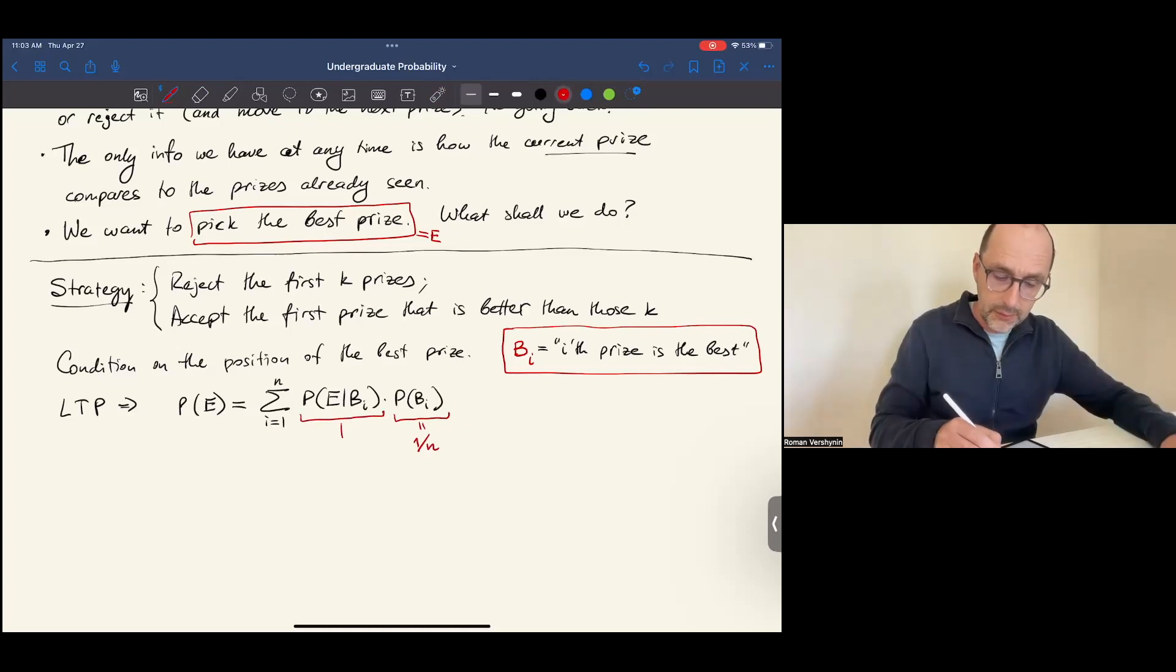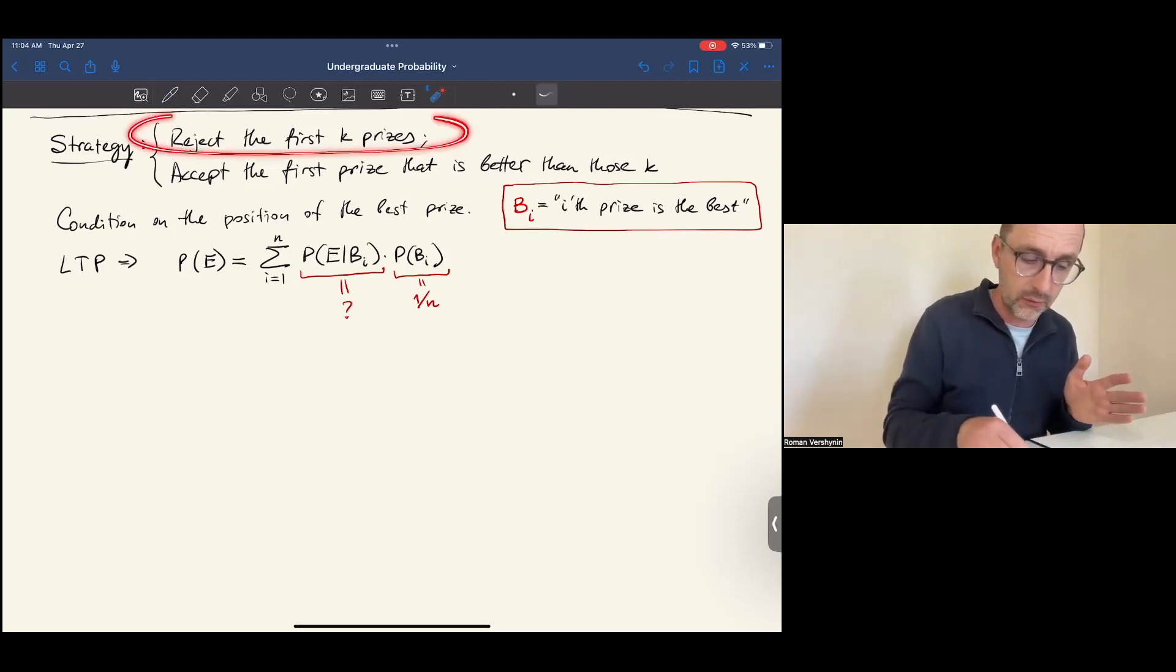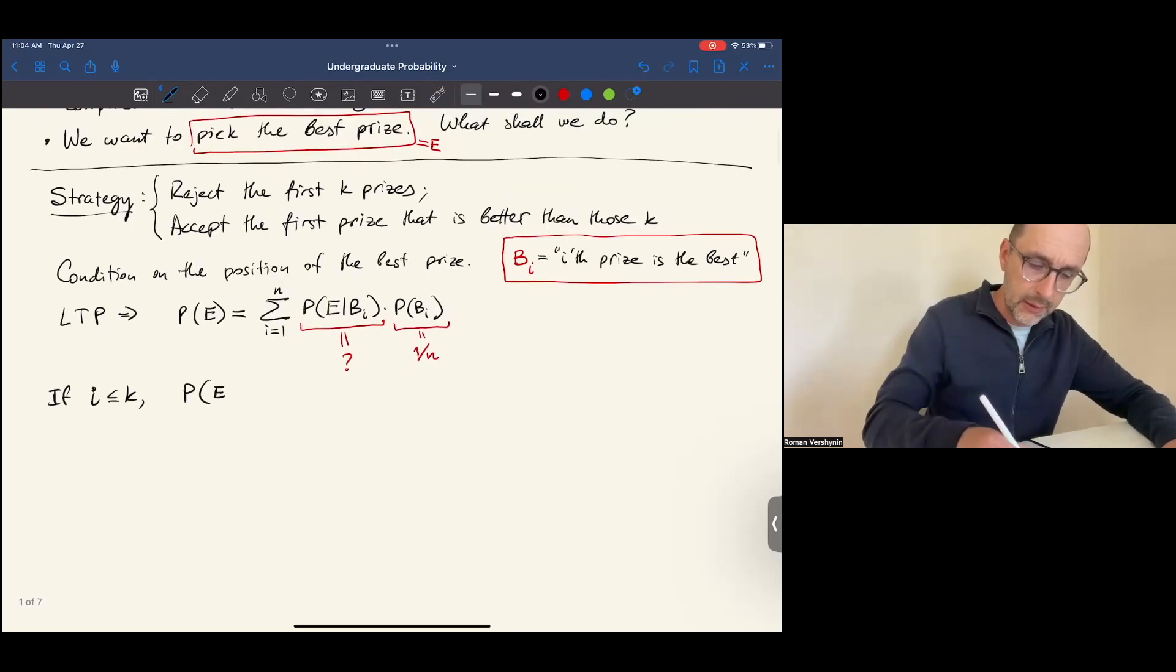And now let's compute this conditional probability. There are two cases. If the best prize happens to be among the first k, we will automatically reject it by the strategy. This is an unlucky situation. So if i is less than k, then the probability of picking the best prize, given that the best prize is i, is 0.